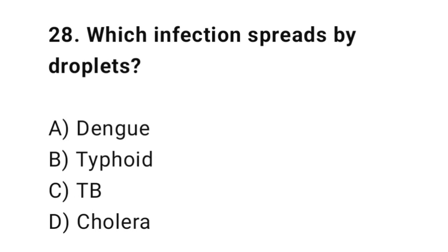Question number twenty-eight: which infection spreads by droplets? The right answer is C — TB. TB spreads through droplet infection.